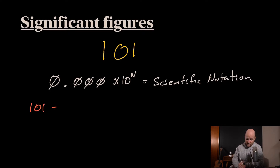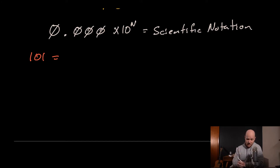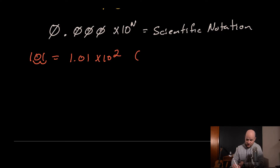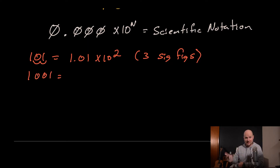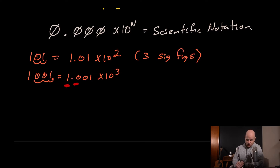Let's do a few example problems. Starting with the number 101: to write it in scientific notation, move the decimal two spots to the left, giving us 1.01 times 10 to the second. We look at that and count one, two, three digits — so 101 has three significant figures. Now let's look at 1001: move the decimal three spots to the left and we get 1.001 times 10 to the third. Counting the digits: one, two, three, four — so 1001 has four significant figures.